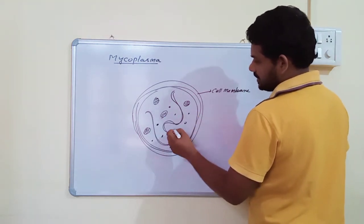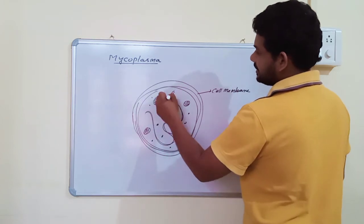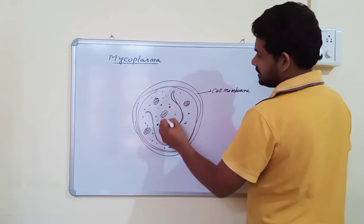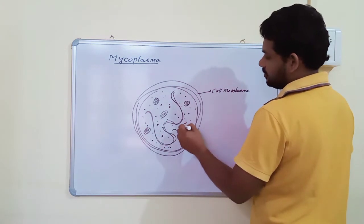And some enzymes, proteins and single-stranded DNA, 70s type of ribosome is also present. This is the cell structure of mycoplasma.